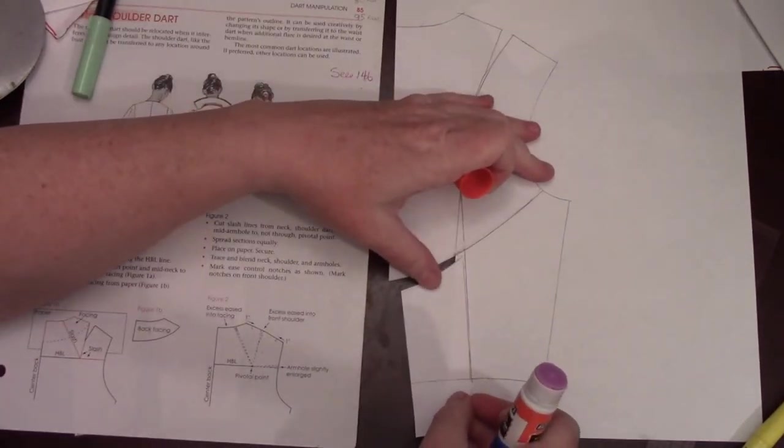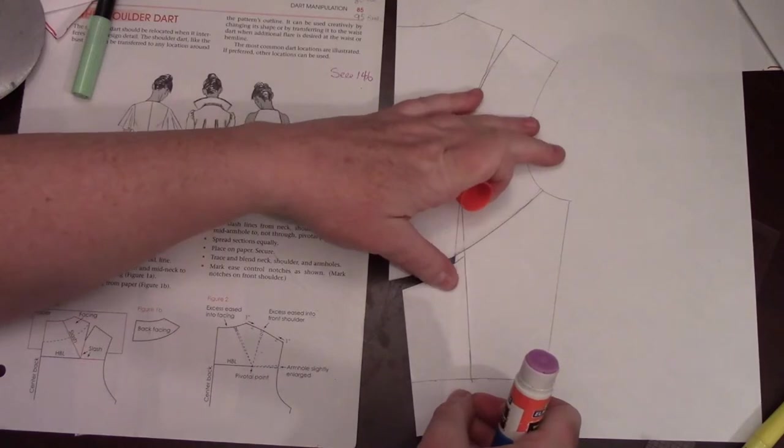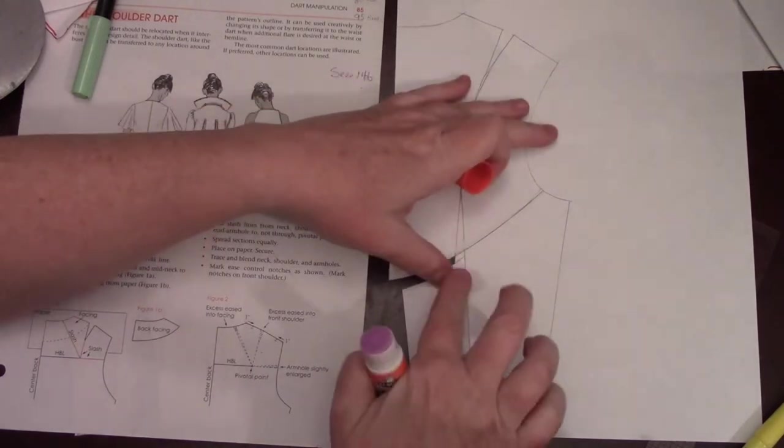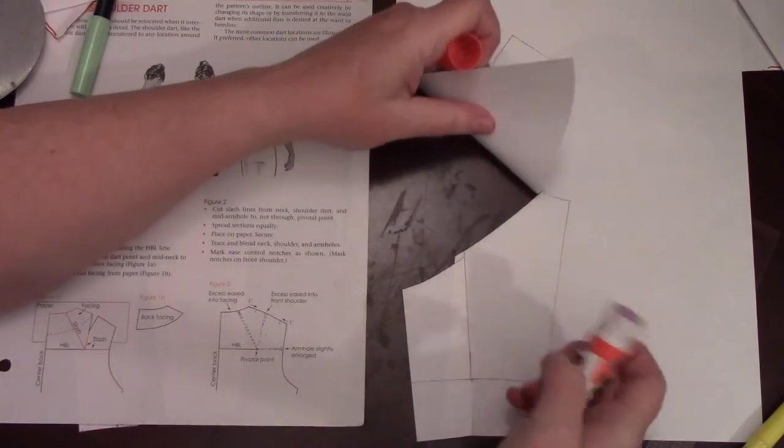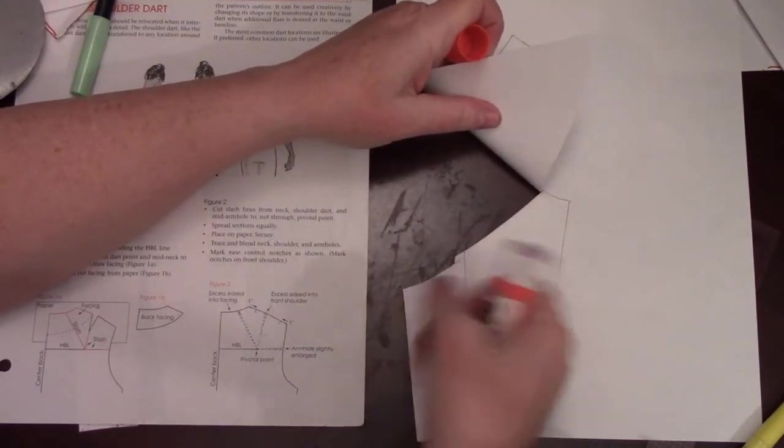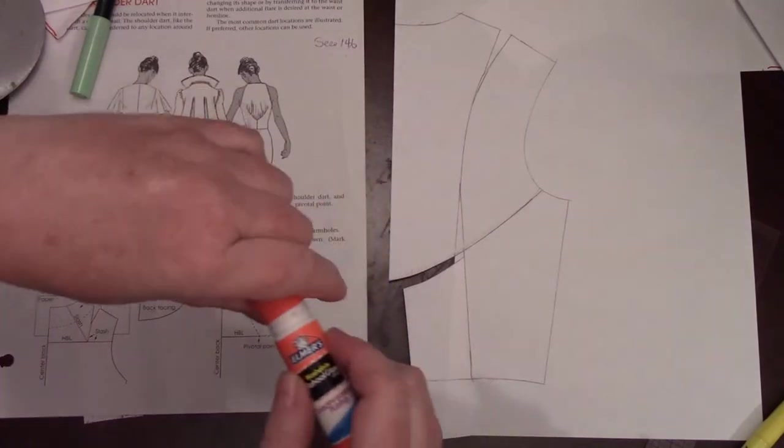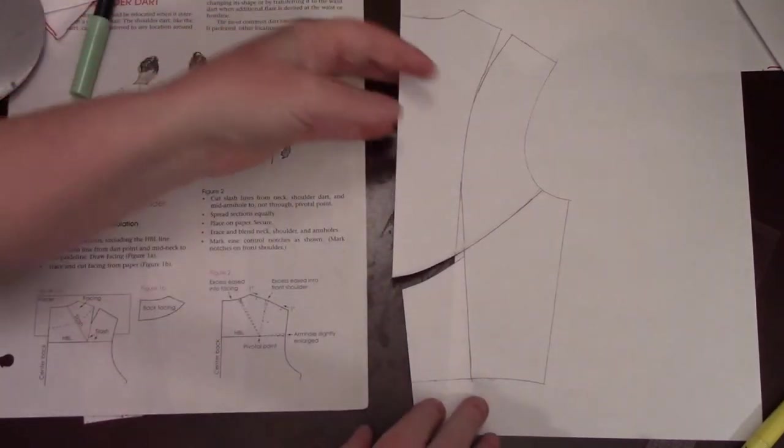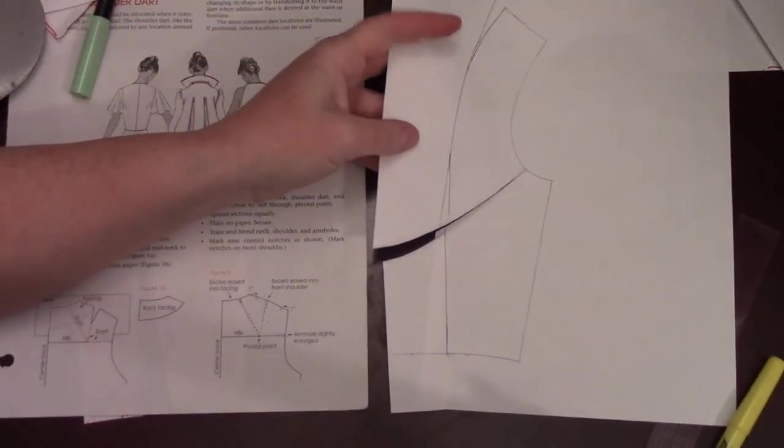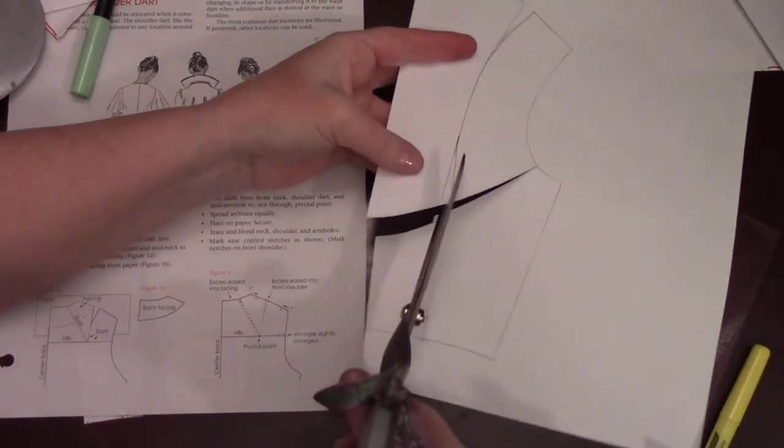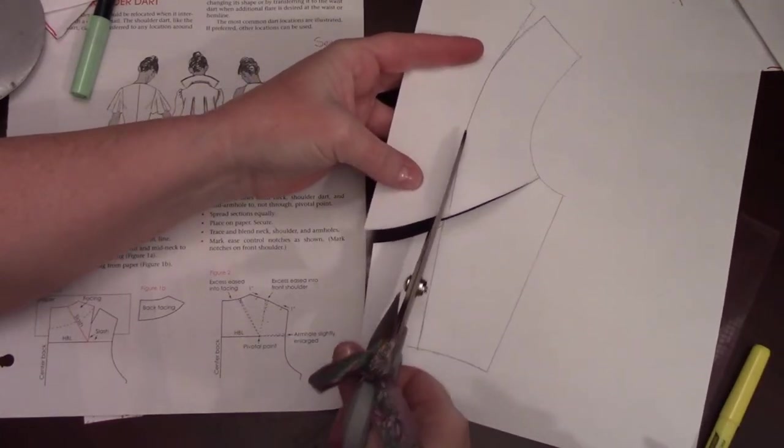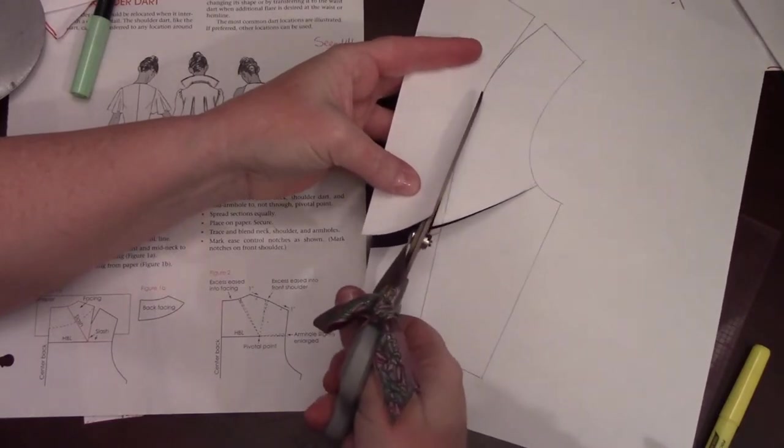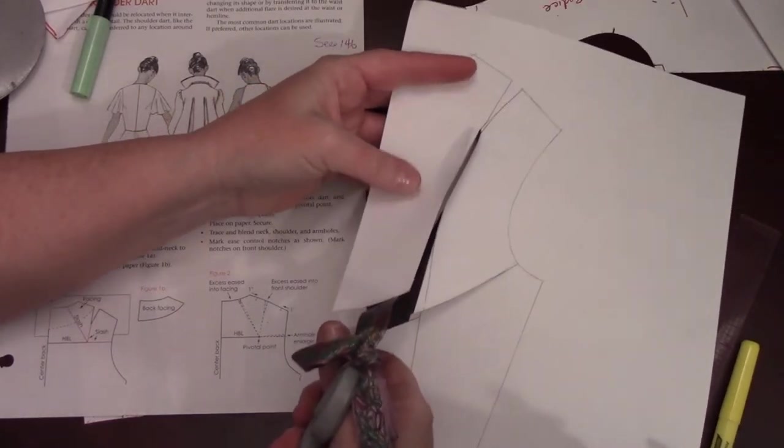This time I'm going to connect it at the bottom though. And when this piece, when I'm through, I'll redraw that so I blend it between the two spaces. And then this one, when I cut this, I'm going to cut it up to the bottom of the dart end.